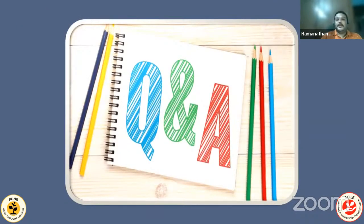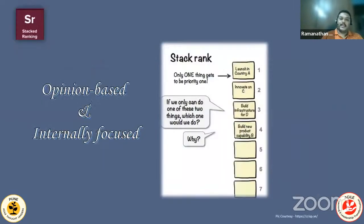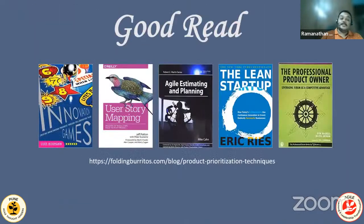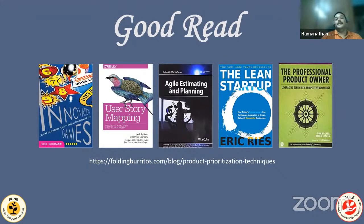That completes all 20 product backlog prioritization techniques. A Mural template and PDF will be shared. The reference article provides all 20 techniques in extensive detail with examples — it will trigger further reading and build deep knowledge in product prioritization, potentially sparking a passion for product ownership. I'm now open for questions.